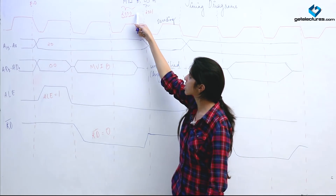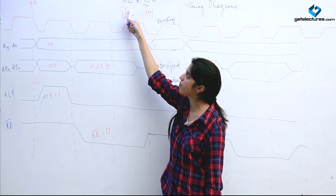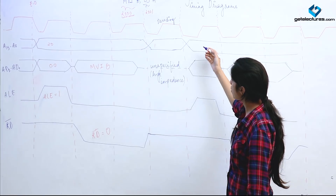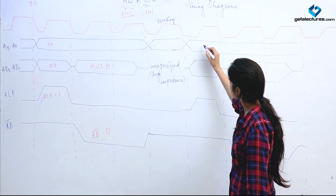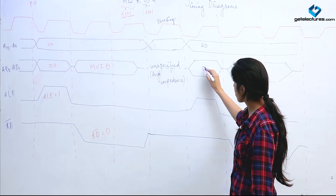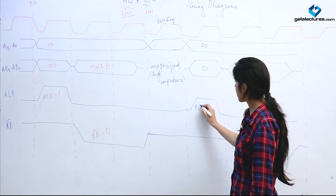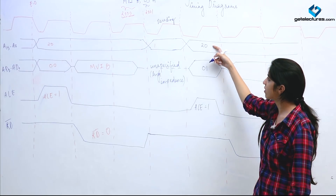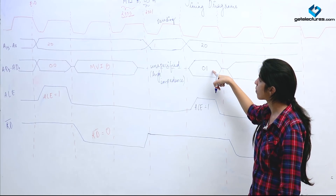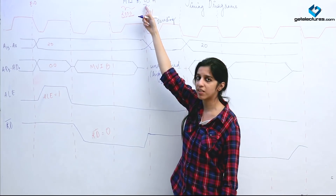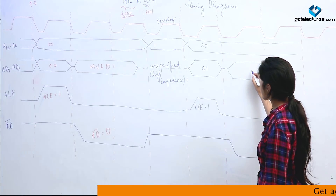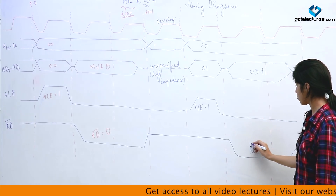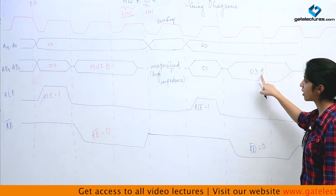When done with memory location 2000H, we move to the next location, 2001H. Again, 20H is placed in the higher address lines and 01H in the lower lines, and ALE is made 1 so the bus acts as an address bus. At location 2001H, the data 03H is stored, so 03H appears on the data bus. Read bar is made 0 again to read this data.